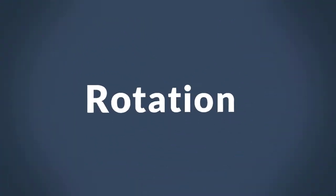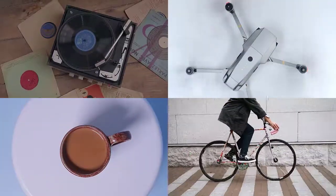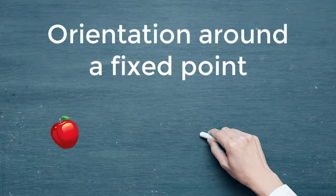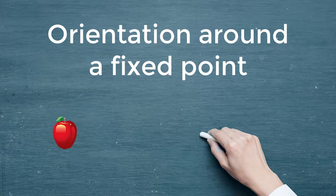Hello everyone, today we are going to talk about rotation. When we are speaking about rotation, we can imagine many things that turn around and around a certain point. Mathematically speaking, rotation is a change of orientation around a fixed point — no change of size, no reflection.